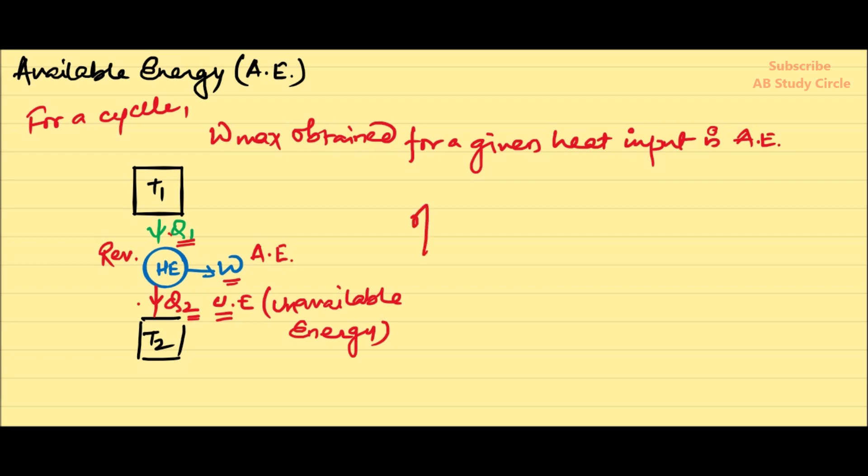Now, let us have the efficiency of this engine, that is W by Q1. As it is reversible, it can be written as 1 minus T2 by T1. So, for having maximum work output, the efficiency should be maximum.